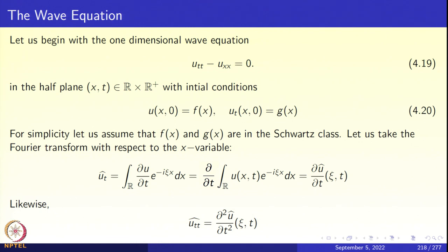Now let us go to the next part of this chapter: the wave equation. Let us begin with the one-dimensional wave equation, u_tt minus u_xx = 0, equation 4.19. We look at this equation in the half-space where x varies over the real line and t varies in R_+. It is a second-order equation in time, so two initial conditions must be prescribed: u(x,0) = f(x) and u_t(x,0) = g(x), equation 4.20. For simplicity, assume f(x) and g(x) are in the Schwarz class — these conditions can be relaxed tremendously, but let us not bring in those technicalities now.